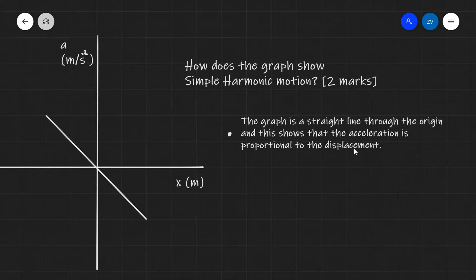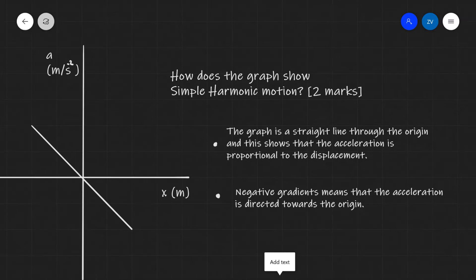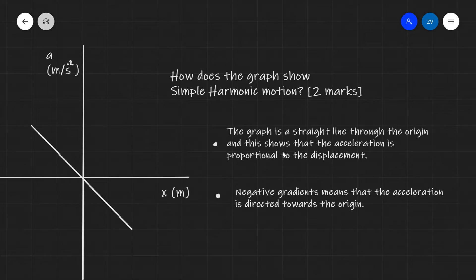The second really important feature is that the negative gradient showcases that the acceleration is always directed towards the origin. An important point to make is that we need all parts of those statements to score all the marks in an exam situation.